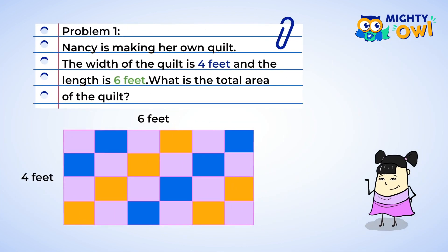Okay, Nancy is making her own quilt. The width of the quilt is four feet and the length is six feet. What's the total area of the quilt? Well, we have our two side lengths, four feet and six feet, so we can multiply those.